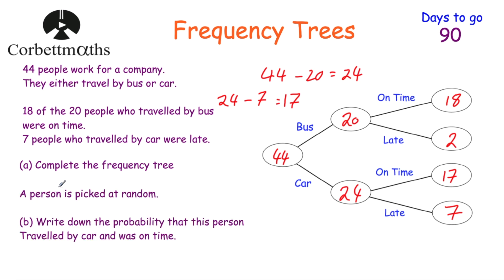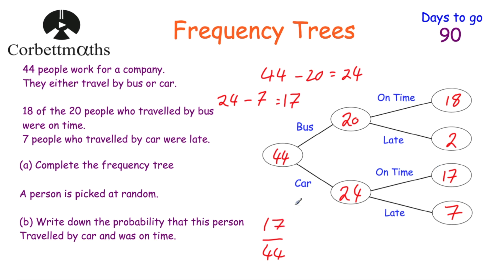Now we're told a person is picked at random from the 44 people that work for the company. The question says: write down the probability that this person traveled by car and was on time. Feel free to pause the video and give this a try yourself. So one of the 44 people is picked at random, so we know it's going to be out of 44. If we look at traveled by car and was on time, there are 17 of those people. So the probability is 17 out of 44. Well done if you got that.